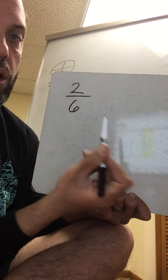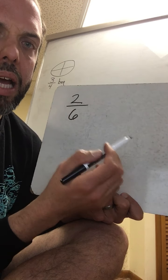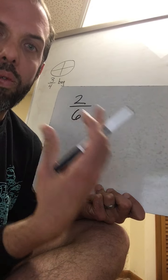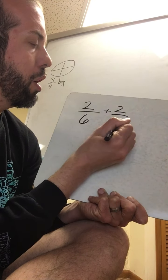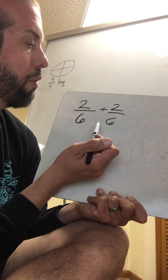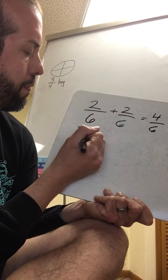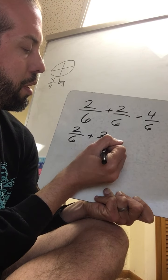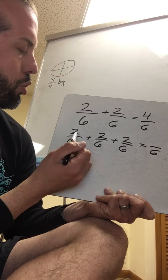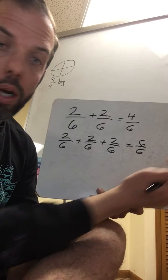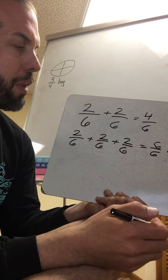I want to give you some info before we start the actual lesson. So two-sixths — if I continue to add two-sixths, watch what happens. If I add two-sixths plus two-sixths, we learned back at the beginning of the chapter that we keep our denominator the same, so that would equal four-sixths. If I do it again — two-sixths plus two-sixths plus two-sixths — the denominator stays the same, two plus two plus two equals six-sixths, and we know that would be one whole.